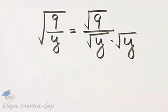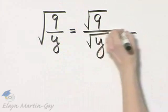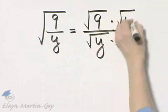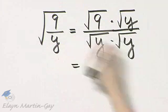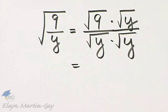If I multiply the denominator by the square root of y, I must multiply the numerator by the exact same thing in order to keep the equality going. And now, let's simplify.